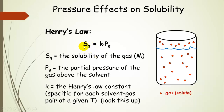We can express Henry's Law mathematically: S_G equals k times P_G, where S_G is the solubility of the gas in molarity, P_G is the partial pressure of that gas, and k is the Henry's Law constant. The constant k is specific for each solvent-gas pair at a given temperature — it's a very specific constant for each system that you would look up.